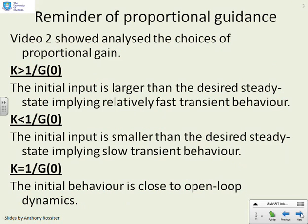First then, a reminder of the proportional guidance. What have we shown? We've shown that if k, the proportional gain, is bigger than 1 over g of 0, then the initial input is larger than the desired steady state, which implies relatively fast transient behavior.